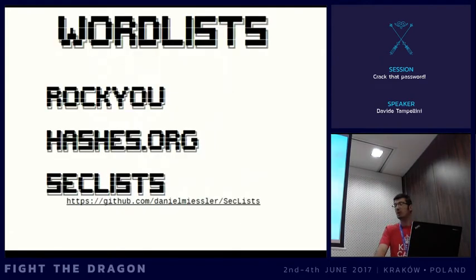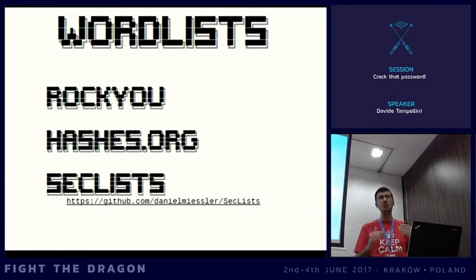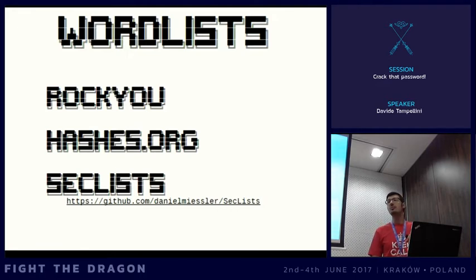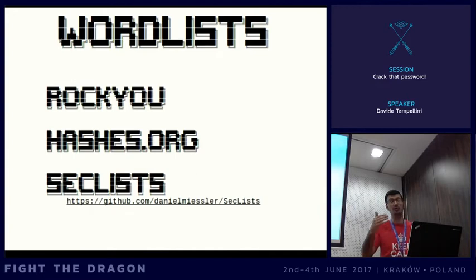Finally we have the dictionary attack. Basically you have a list of words that might be used as passwords and you try them with some variations. The main challenge is finding the word list. There are several resources online: the RockYou word list — in 2009 the RockYou site was hacked and they were storing passwords in plain text, so that list contains real passwords people actually used. Hashes.org releases a weekly updated list of cracked passwords. Finally, the SecLists repository on GitHub has a folder with several collections of password word lists.